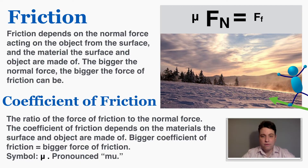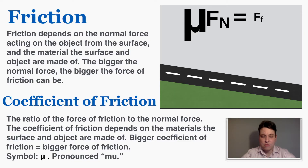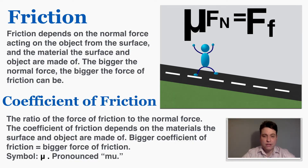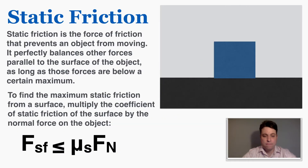If the coefficient of friction is very large, the force of friction is going to be very large. Standing on a road, friction is enough to hold you back from accelerating forward. For a person standing on a hill, a large coefficient of friction means the frictional force is enough to keep them from starting to slide down the hill.